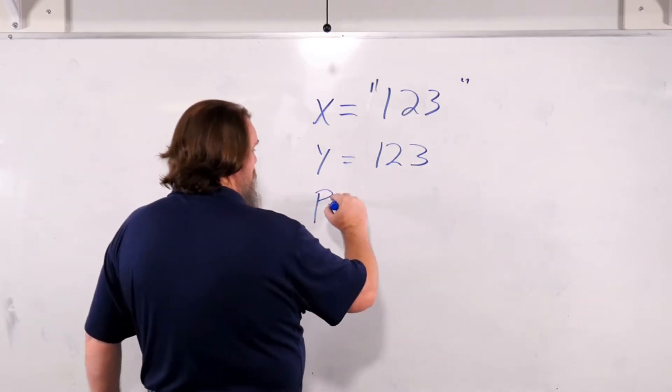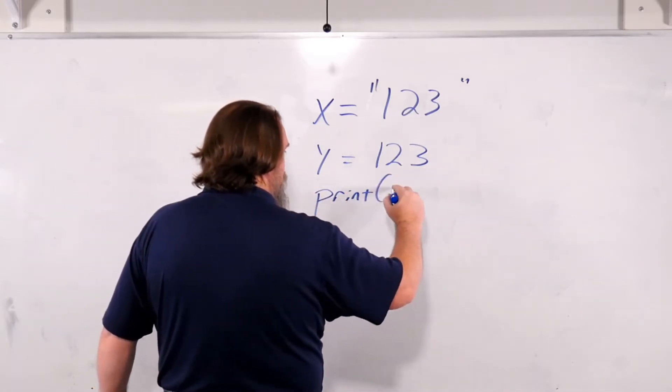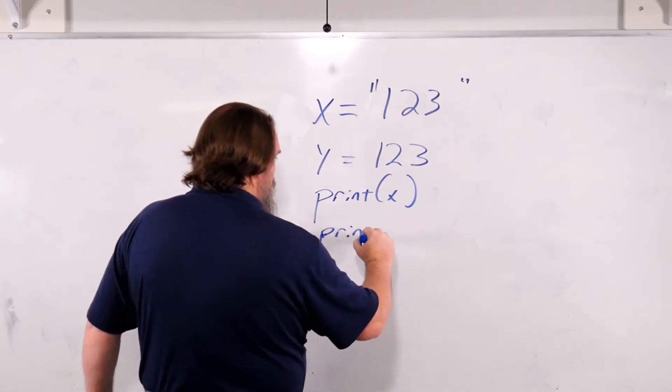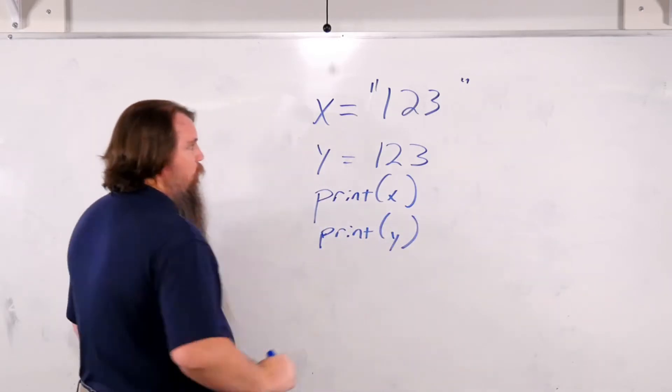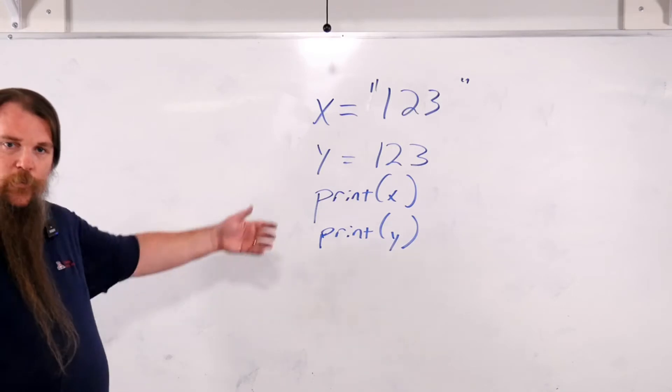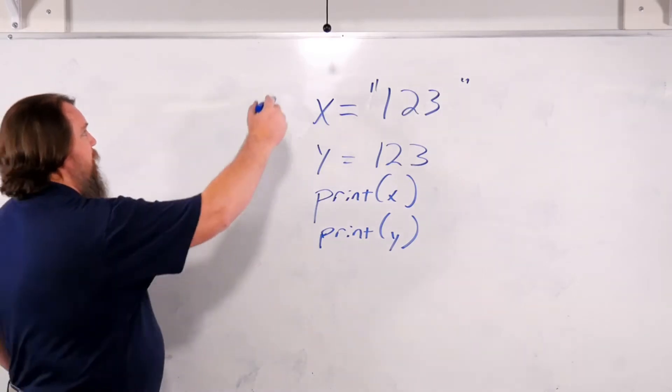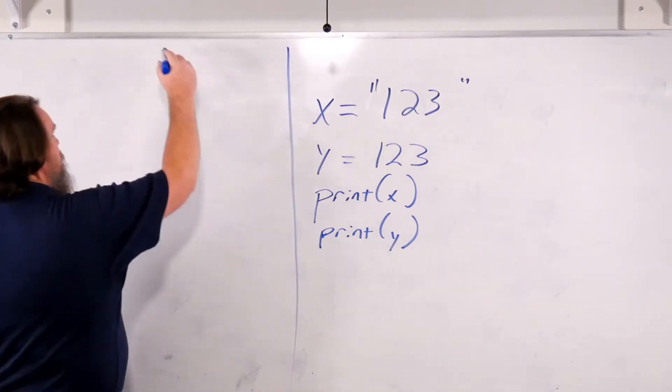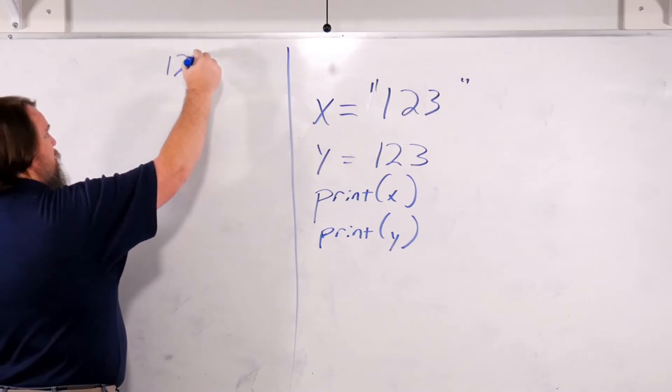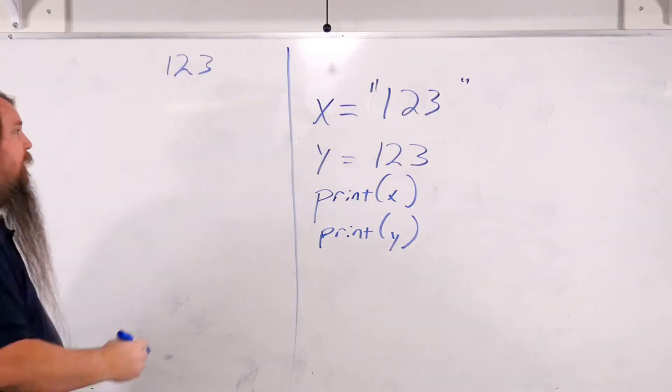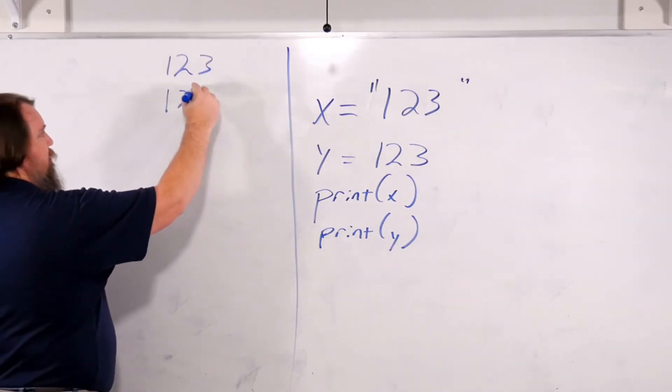Well we're not going to be able to see it if we print it. If we print x and then we print y, what are we going to see? We're going to see exactly the same output. We're going to see 1, 2, 3, and then we're going to see 1, 2, 3.